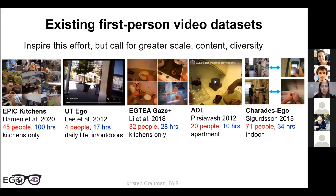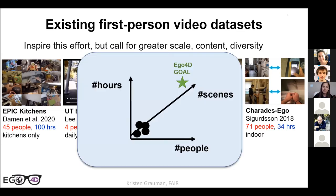Where we wanted to start with Ego4D is to tackle a dataset problem. Influential datasets have been coming in recent years, but what we were after is to really enhance the scale, content, and diversity. The largest dataset to date had 45 individuals, 100 hours of content, in a couple of cities and in kitchens alone. We wanted to take it to the next level in terms of video volume, number of people, places, scenes, and activities.